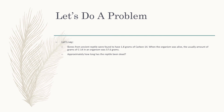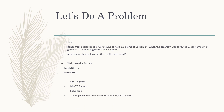Approximately, how long has this reptile been dead? Using the formula, since we know K is 0.0012, we need to find NF and NO. NF — the current amount of carbon-14 in the organism — is 1.8 grams, and NO — the amount it had when it died — is 57.6 grams. When you solve for T, you get that the organism has been dead for approximately 28,881.1 years.